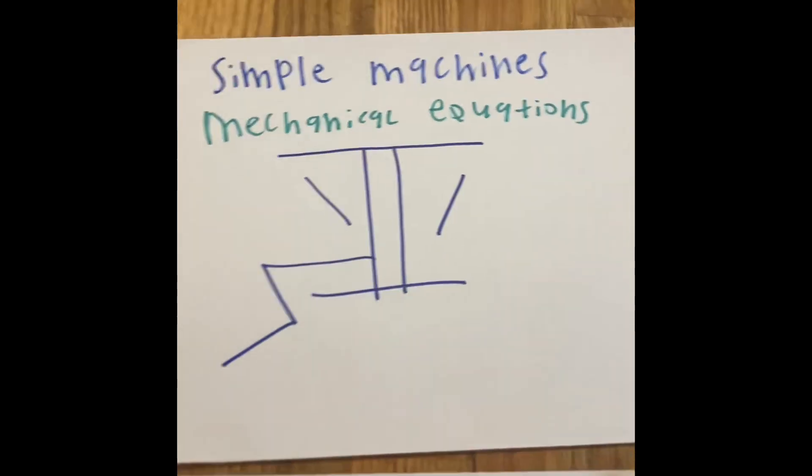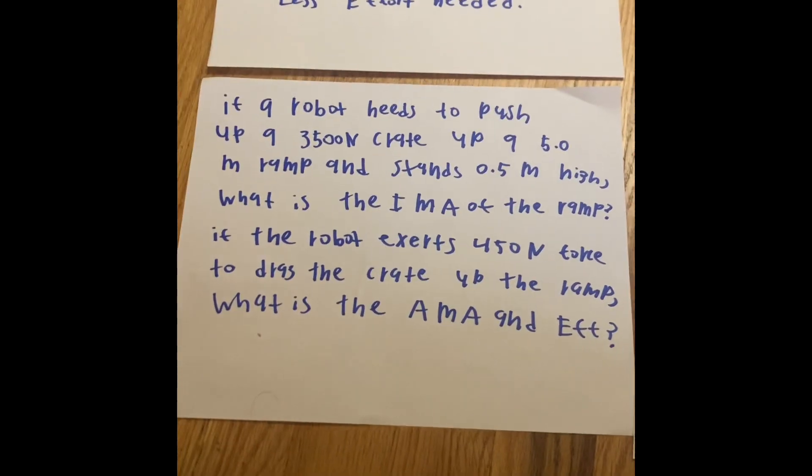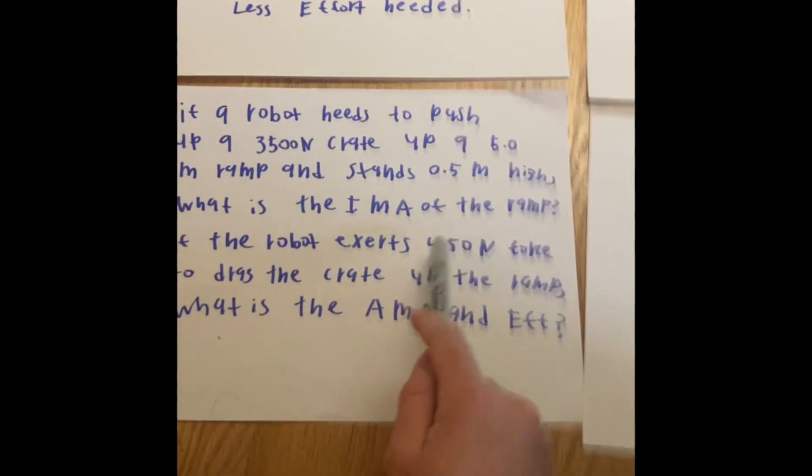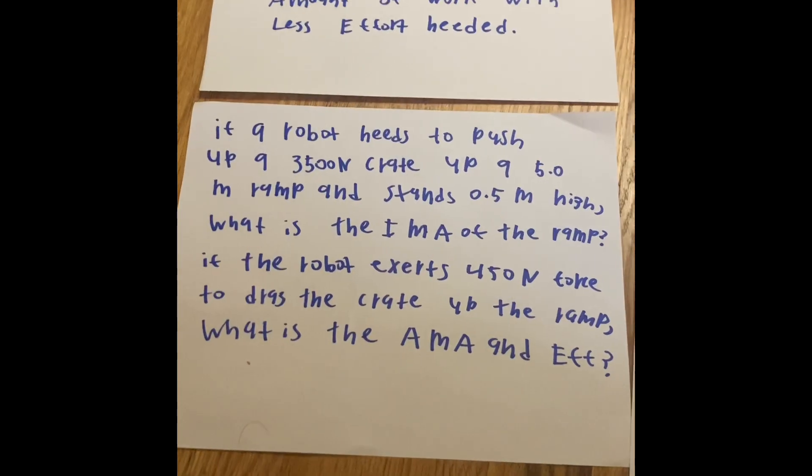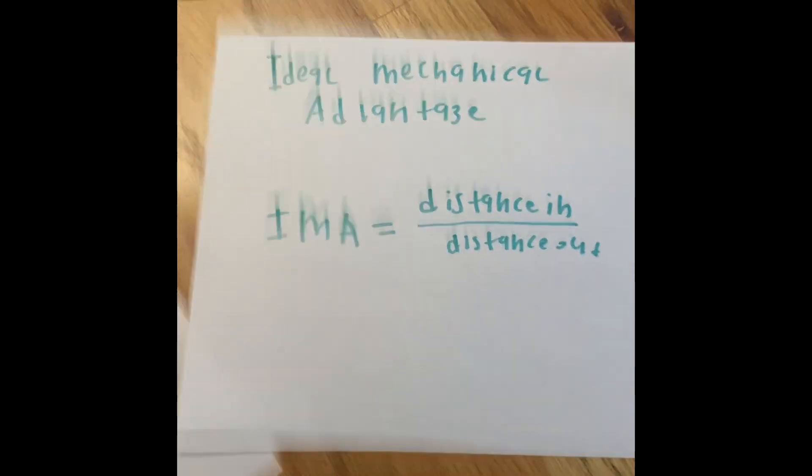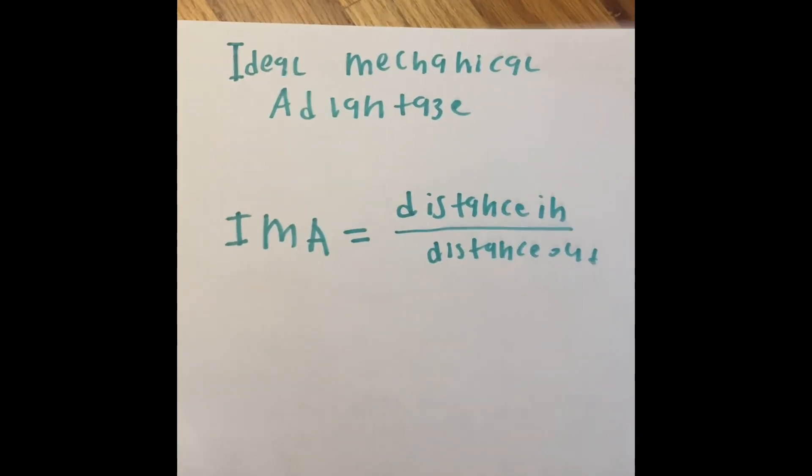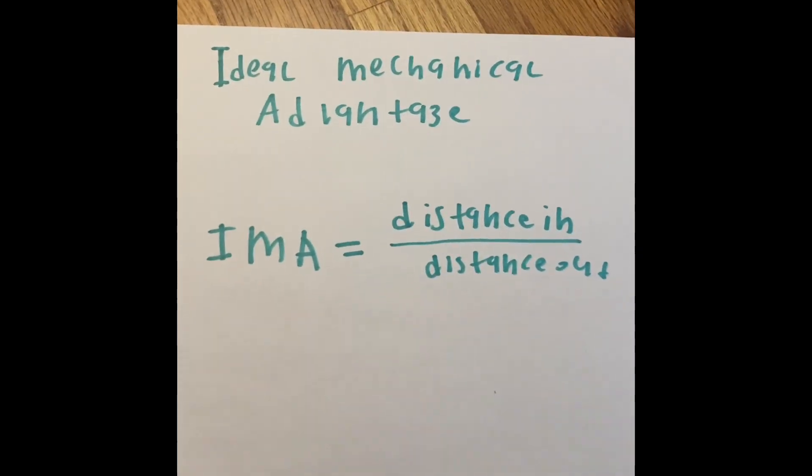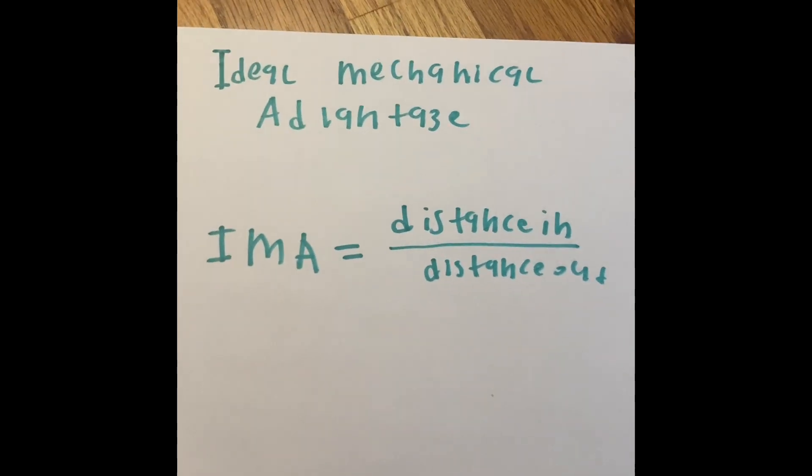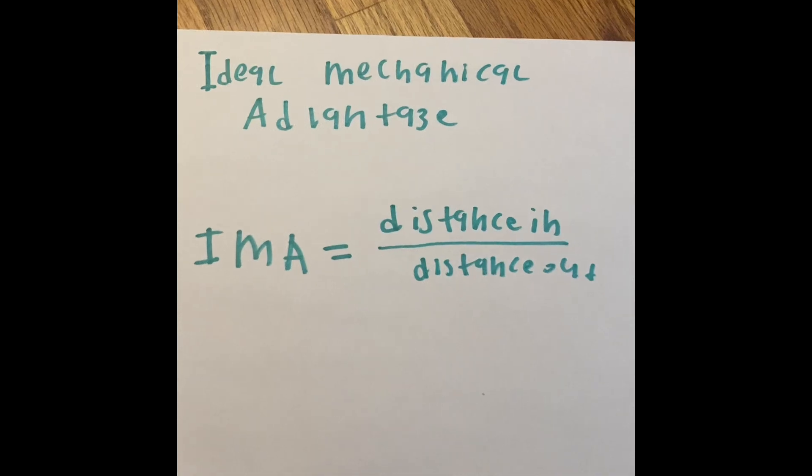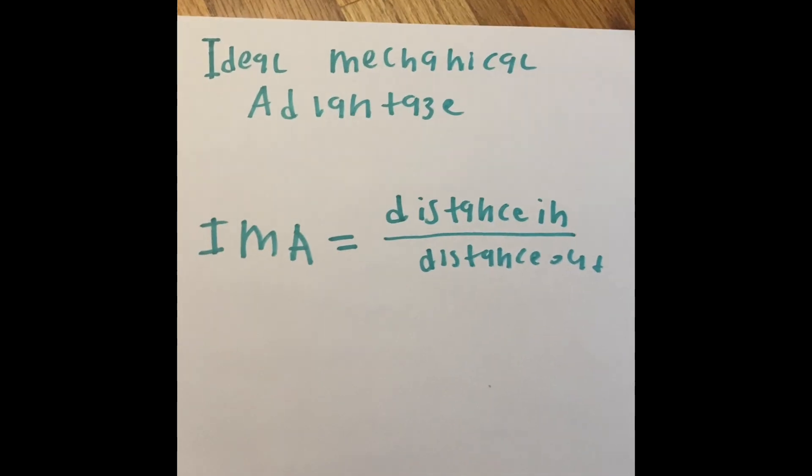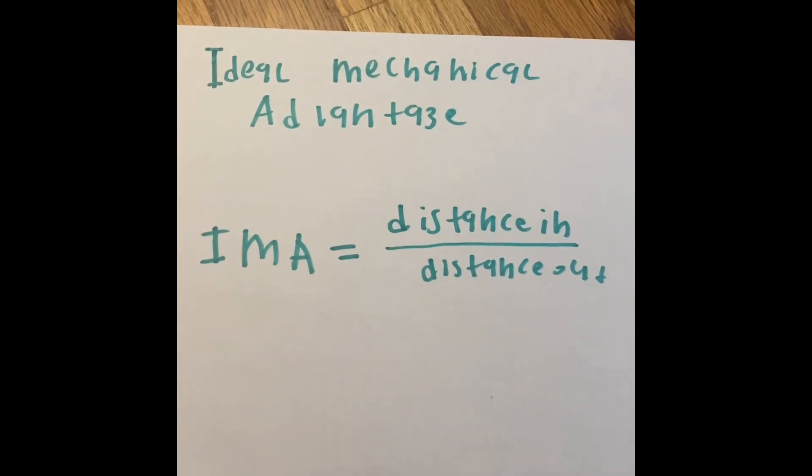So when the word problem talks about the IMA, when it says, what is the IMA of the ramp? Here is what the ideal definition of what the IMA is. And literally, it does say, ideal mechanical advantage. So the IMA, or ideal mechanical advantage, represents how much effort a machine is doing to perform work, to complete a task.